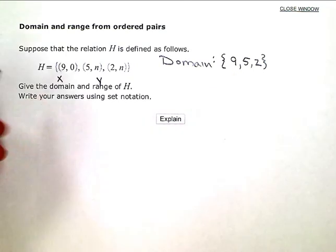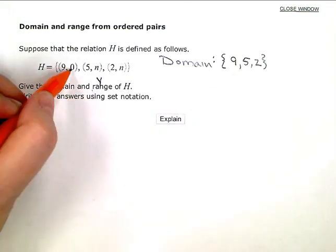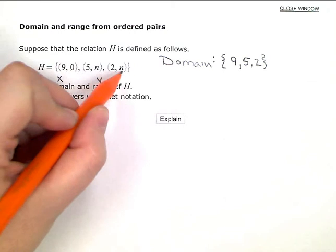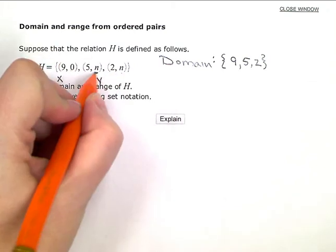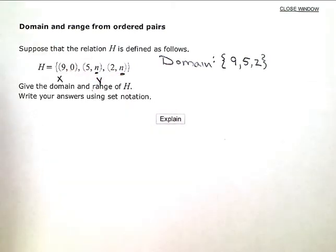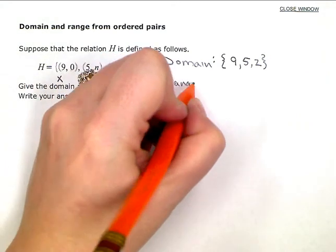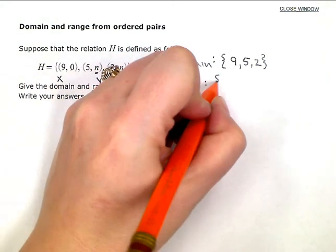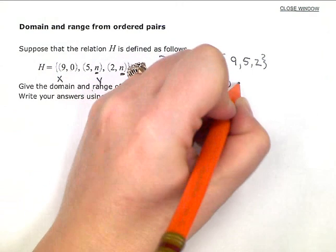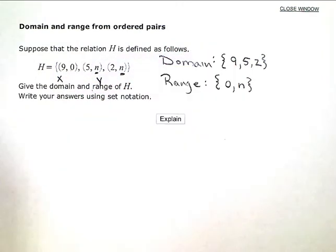My range are the Y values, so I have 0, N, and N. So since this one repeats, I don't have to list it twice. The range is going to consist of 0 and N, and I don't have to duplicate that.